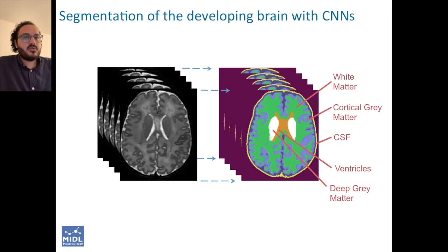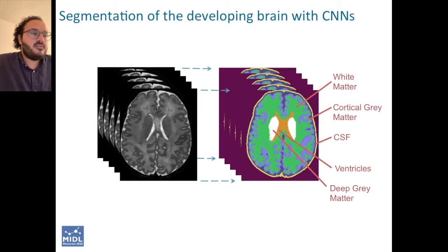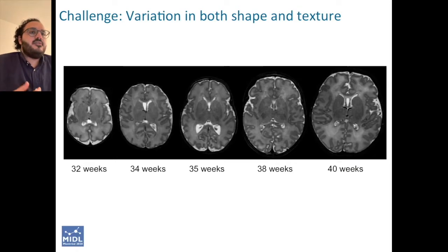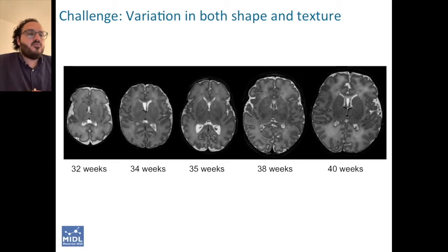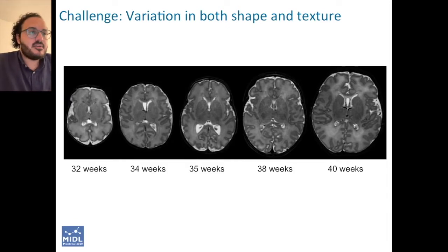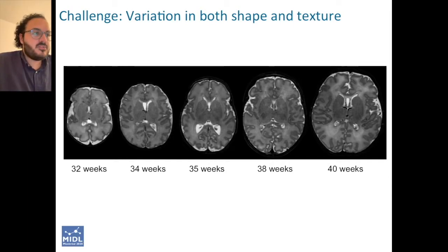Whilst this sounds like a really straightforward task that might have already been solved with CNNs, it's actually rather difficult for a variety of reasons, but mainly because there are variations in both shape and texture, as you can see in this slide. This is one of the main reasons we think that recent findings actually question our fundamental understanding of CNNs, which is directly relevant to this area in medical imaging, especially if we need to use deep neural networks to achieve common tasks.